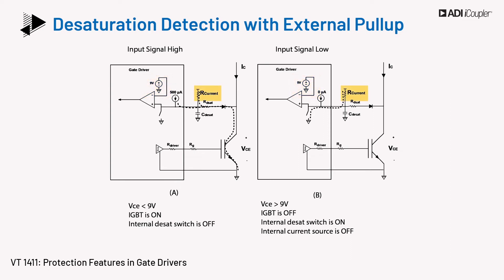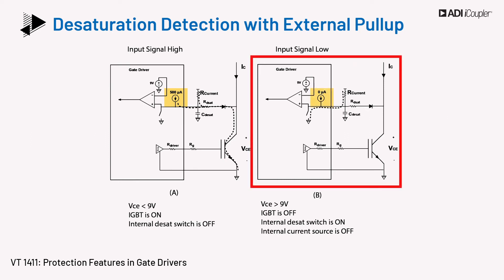In the figure, an external resistor or current source is used to increase the charging current for the desat capacitor, in addition to an internal current source. A power diode with its cathode connected to the drain of the IGBT keeps the high voltage from the drive circuitry. When the input signal is low, the IGBT is off, and the voltage across the IGBT's collector and emitter, VCE, is greater than 9 volts since it blocks a high voltage. At this time, the internal desat switch is on and keeps the desat pin and blanking capacitor C-desat voltage at ground, and the internal current source is off.